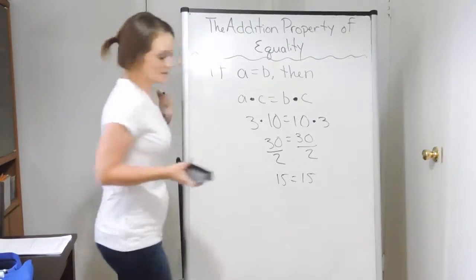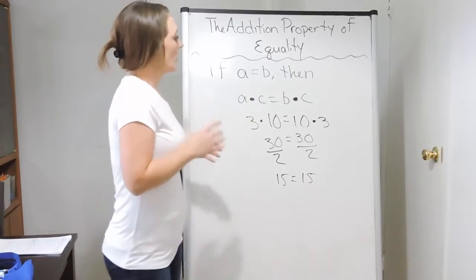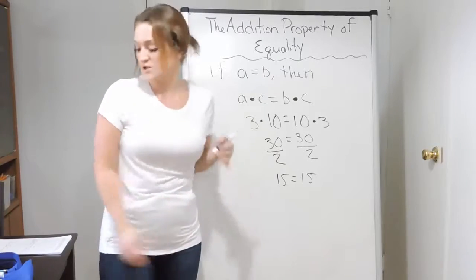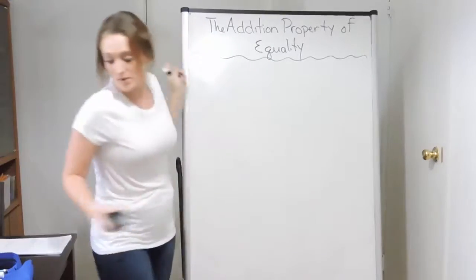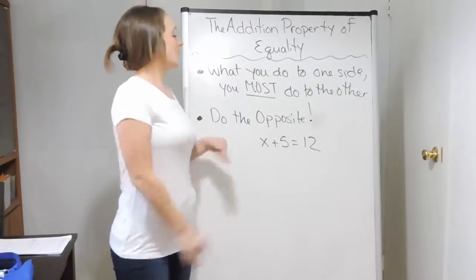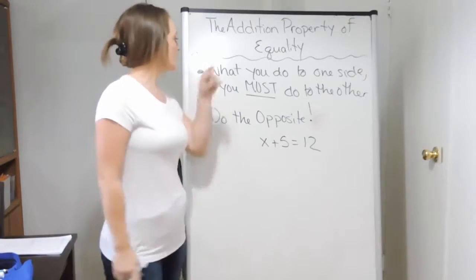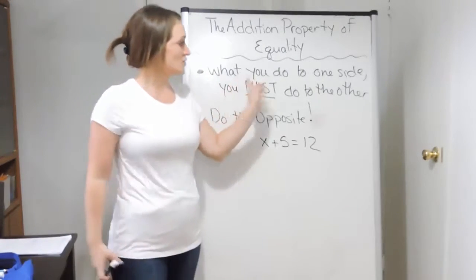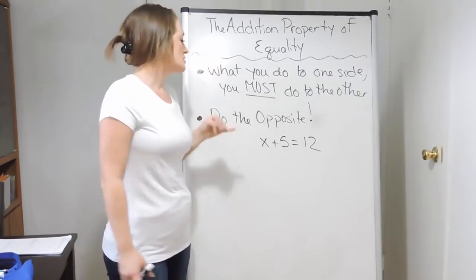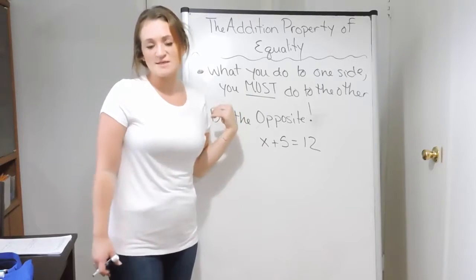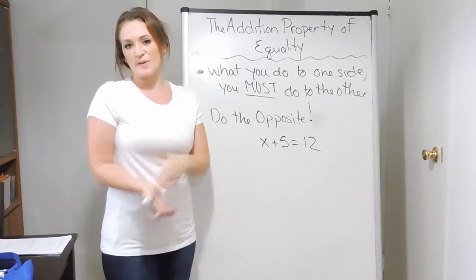So I say all of this — these are the four main properties when it comes to solving equations, and they're going to help you out in almost everything that you do with equations. When I teach solving equations, there are always two main points that I talk about. The first thing is what we just talked about: what you do to one side, you must do to the other side. So if I'm going to subtract on one side, I'm going to subtract the exact same thing on the other side. The same thing goes with addition, multiplication, and division.